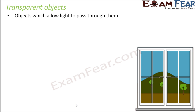Let us start with transparent objects. These are objects which allow light to pass through them completely. When light falls on them, light is able to cross them and move ahead, as it happened with the glass window panes. The light actually crosses the glass and reaches whatever is there on the other side — the mountain, the trees. Light falls on the mountains and the trees, these illuminated objects reflect light, and we are able to see them. So light is completely passing through the transparent glass.